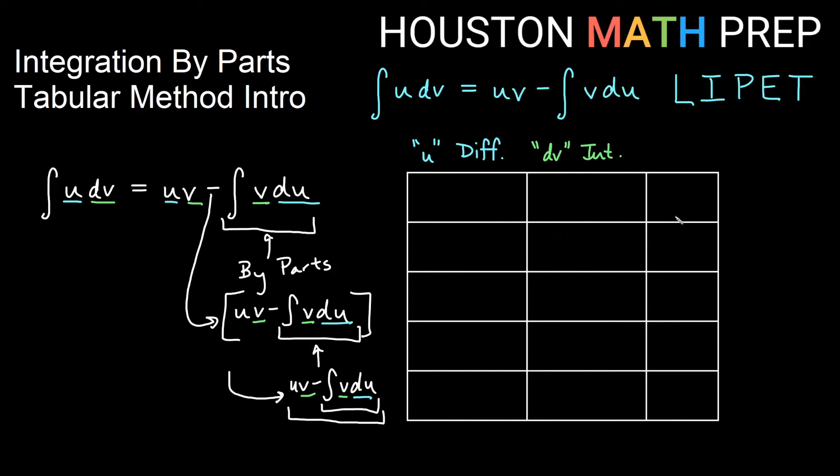So we're going to call this our plus-minus column. And the way we'll do this, we will start with u in the column, we will start with dv in the column.